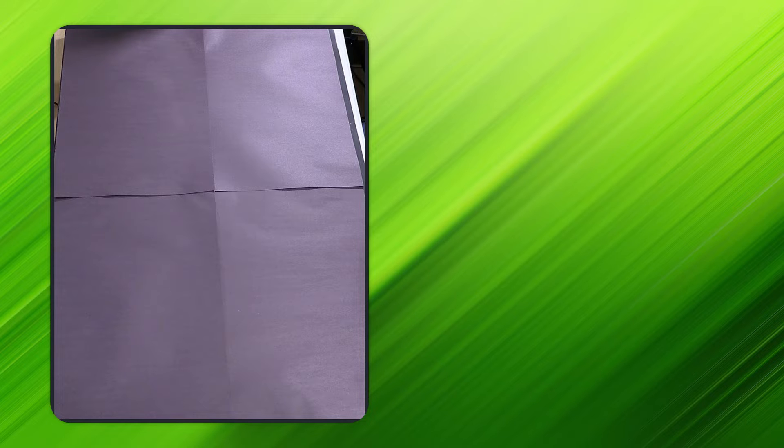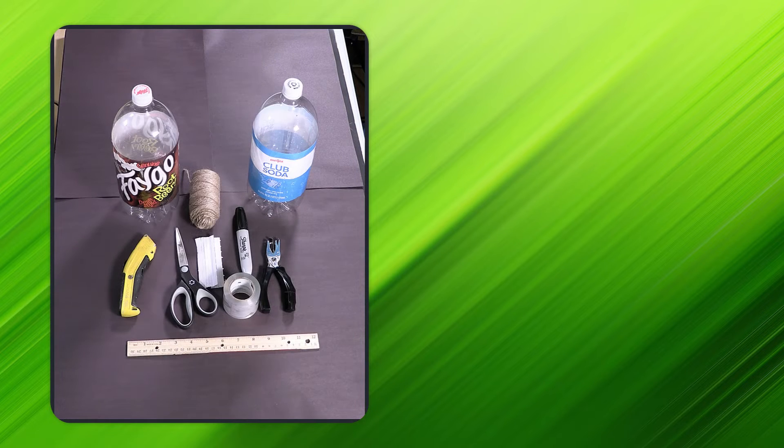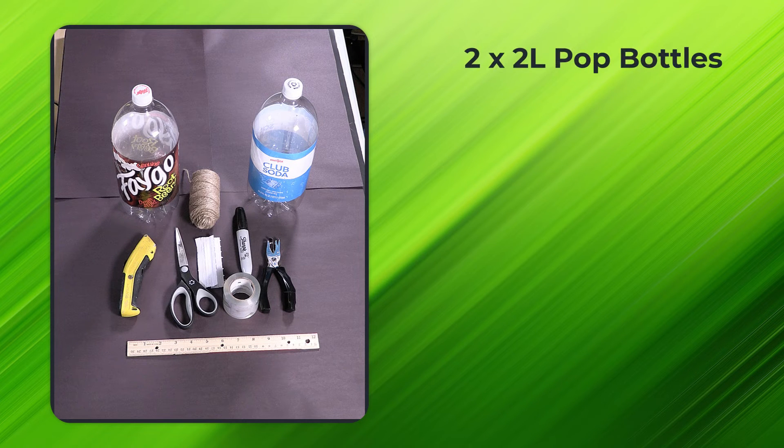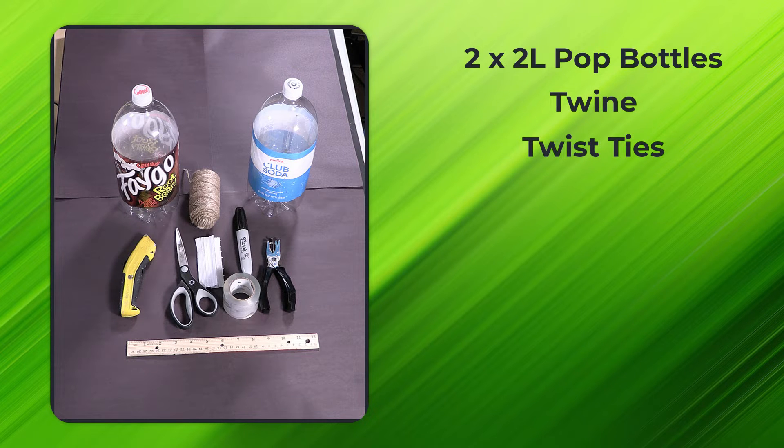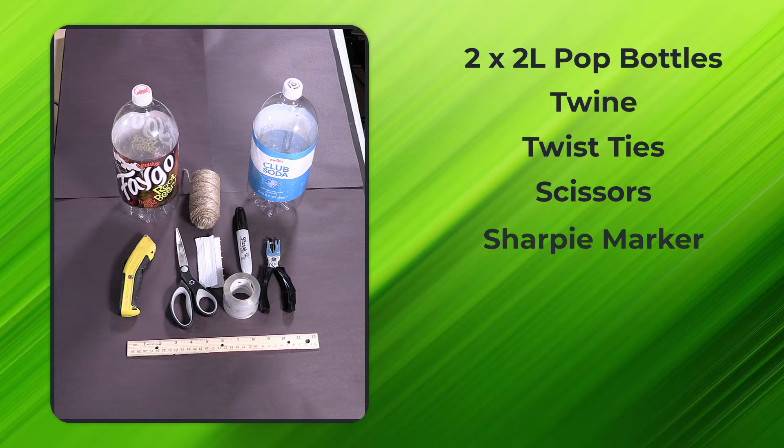In order to build a moth trap, you'll need some supplies. This includes two 2-liter pop bottles, twine or heavy string, twist ties, scissors, a sharpie marker, a ruler, a hole puncher, and a sharp knife.